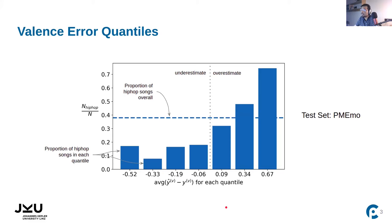We see that a majority of songs for which valence is overestimated are hip-hop songs. In this figure, valence errors are put into quantiles; the y-axis shows the proportion of songs in each quantile that are hip-hop, and the x-axis shows the average valence error for that quantile. As the average error increases, so does the proportion of hip-hop songs. Ideally there should be around 38% hip-hop songs in each quantile, which is their overall proportion in the test dataset.